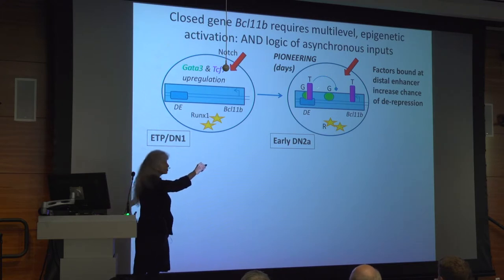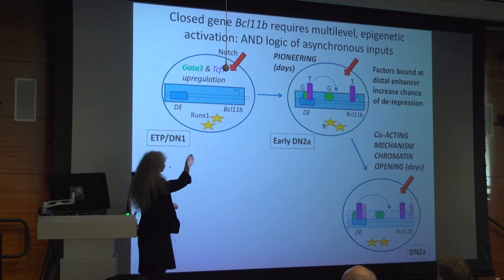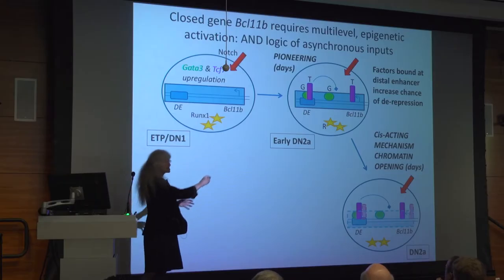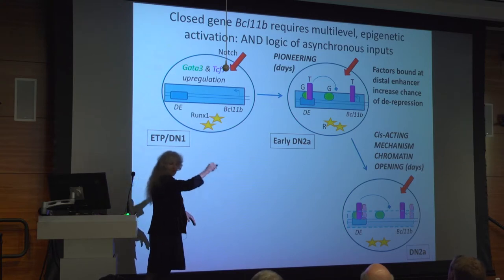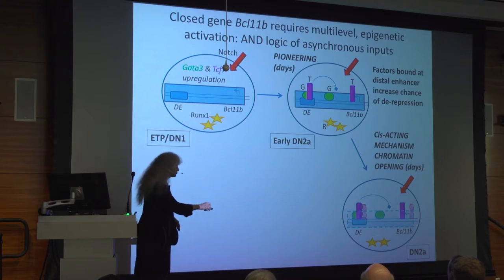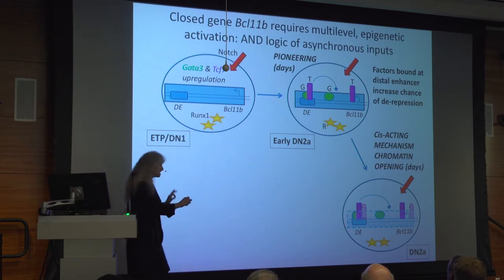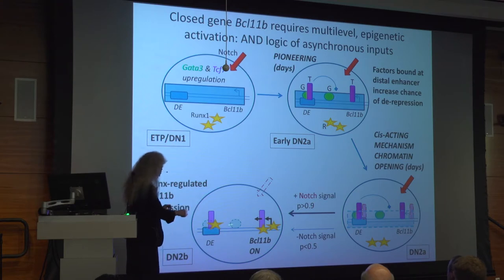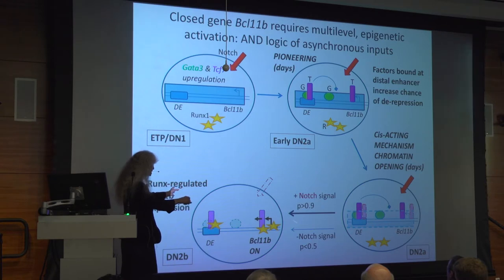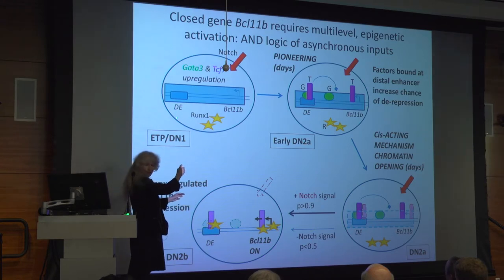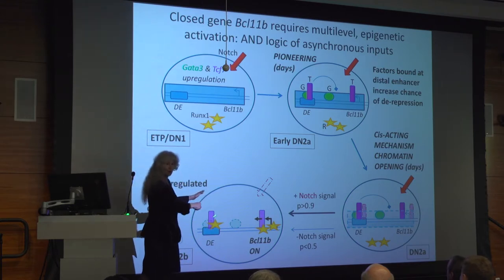GATA3 and TCF presumably establish a beachhead, which now allows the genome to start removing repressive chromatin from this region. Irv Weissman, with Andrew Feinberg's lab, did a genome-wide scan of DNA methylation, and this gene is covered with closed methylation until this point, when the methylation starts to come off. The gene is still not on. But then an additional, more NOTCH signal allows RUNX to come in. At this point, if you take the cells right here, they don't care about GATA3 and TCF anymore — they've already done their job. RUNX and NOTCH still are needed. This gives you a picture of how different regulatory inputs can be coupled over time as part of the need to get a gene on correctly.